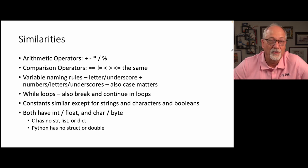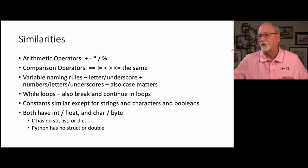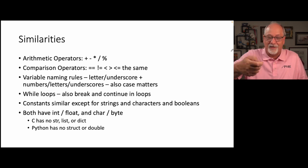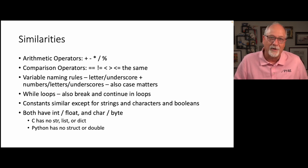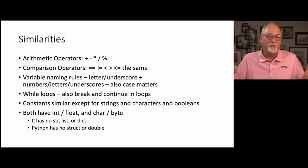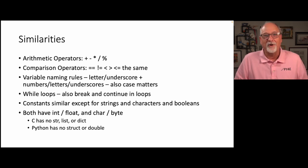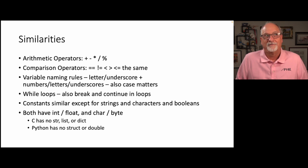There are a lot of similarities I'm not going to cover — arithmetic operators like plus, minus, asterisk, slash, and percent are the same. Modulo is just percent in all these languages because C flipped a coin and decided percent was modulo. Comparison operators, assignment operators, the equality double-equals, exclamation-equals, less than, greater than — all the same. Variable naming rules are the same: start with a letter or underscore, then numbers, letters, and underscores, and case matters in both languages. While loops, break and continue — those concepts carry over directly.